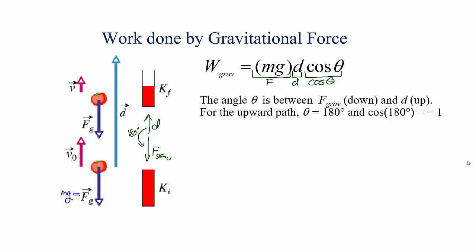Cosine of 180 degrees is negative 1. Another way of remembering this is that if a force is acting in the opposite direction that the object is moving, that force is going to do negative work. So putting these together, the work done by the force of gravity is negative mg times the vertical distance d as something is moving upward.